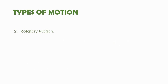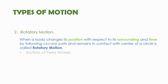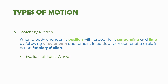The second type is rotatory motion, which is the change in position of a body with respect to its surrounding and time by following a circular path, while the body remains in contact with the center of the circle. Examples include the motion of a Ferris wheel, a fan, a tap, or any wheel. Note that the motion of a rider in a Ferris wheel is not rotatory — it is translatory motion.